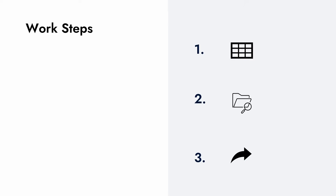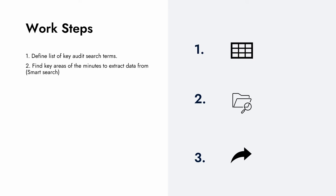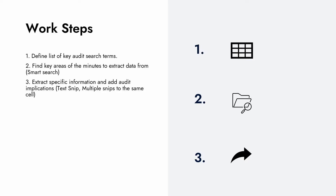In terms of our work steps, we'll begin by identifying a list of our key audit search terms. In reality, this is something that you could do up front in conjunction with a senior or manager on the team. We'll then find key areas of the minutes to snip by using the smart search functionality, and finally we'll make the snips and be able to add our audit implications.